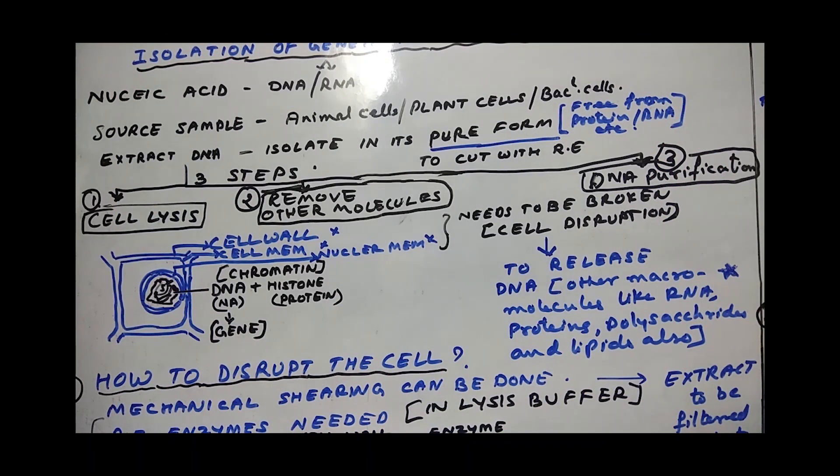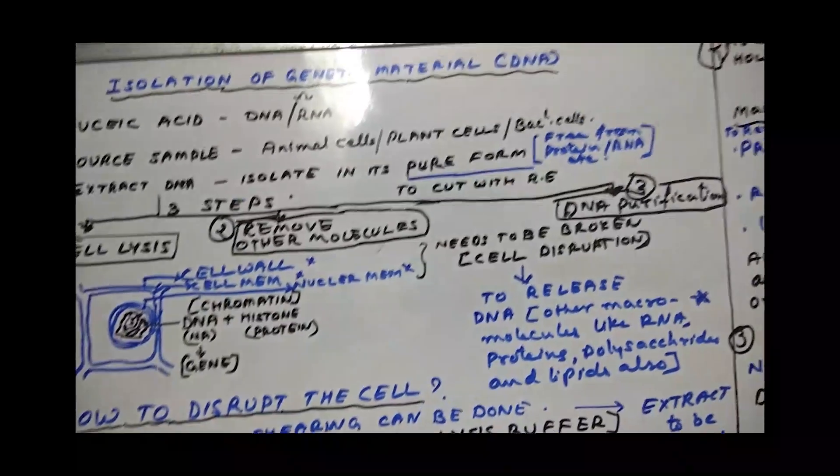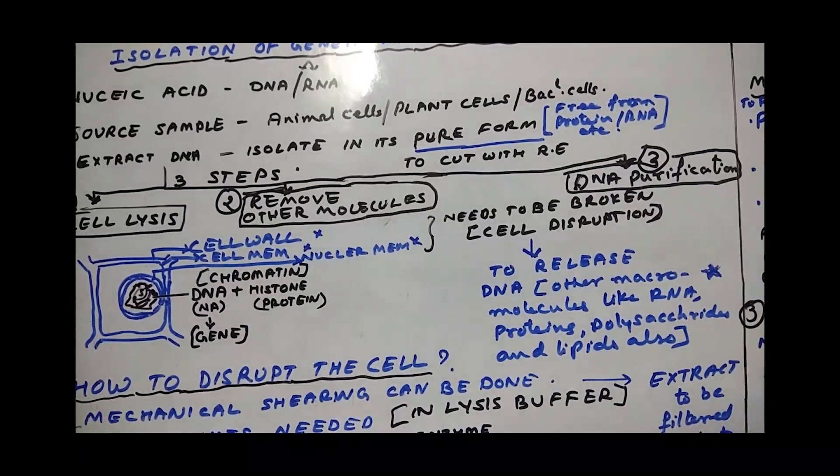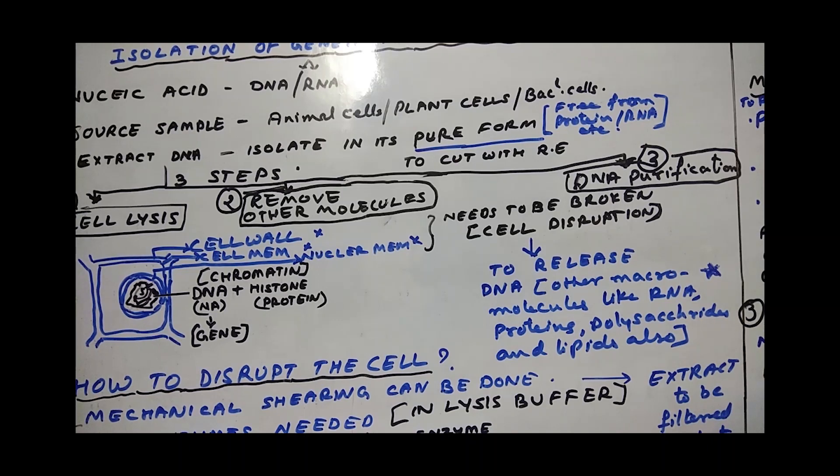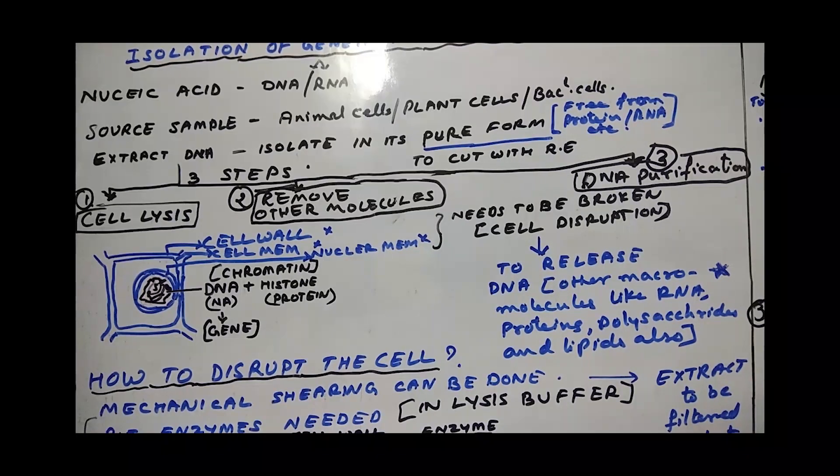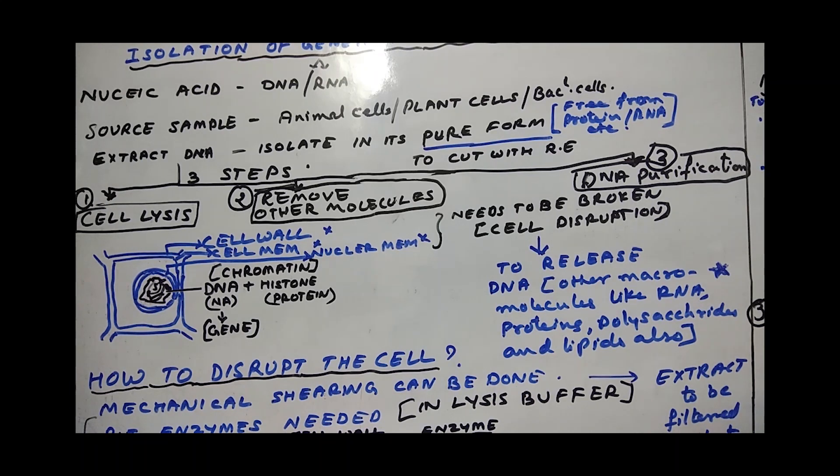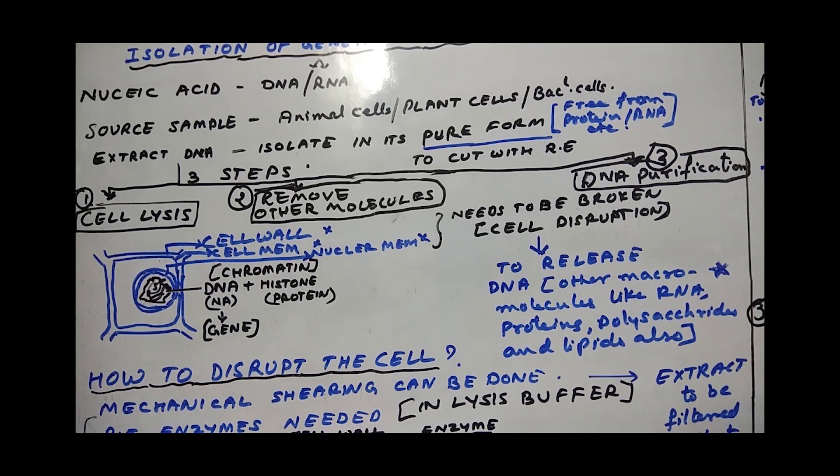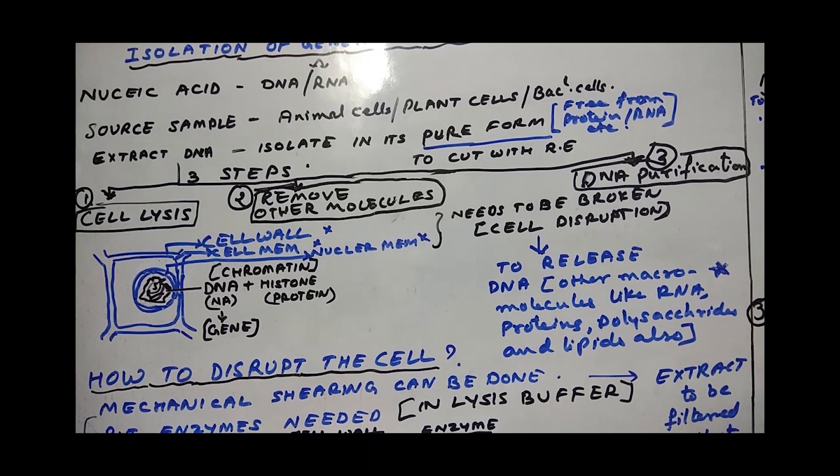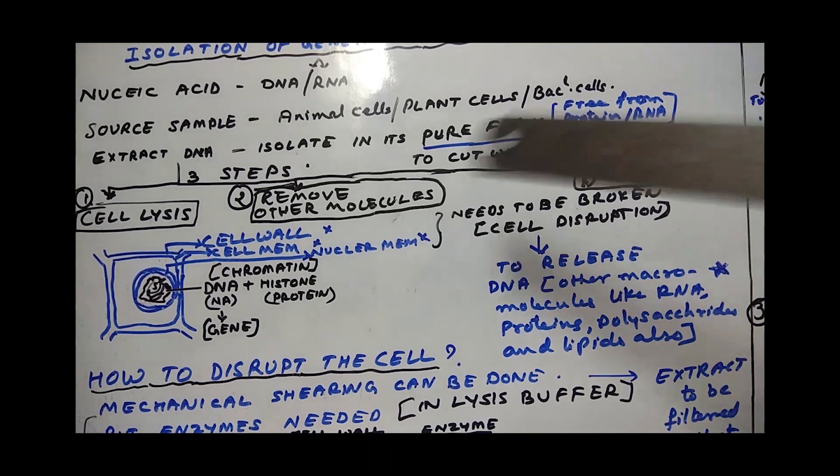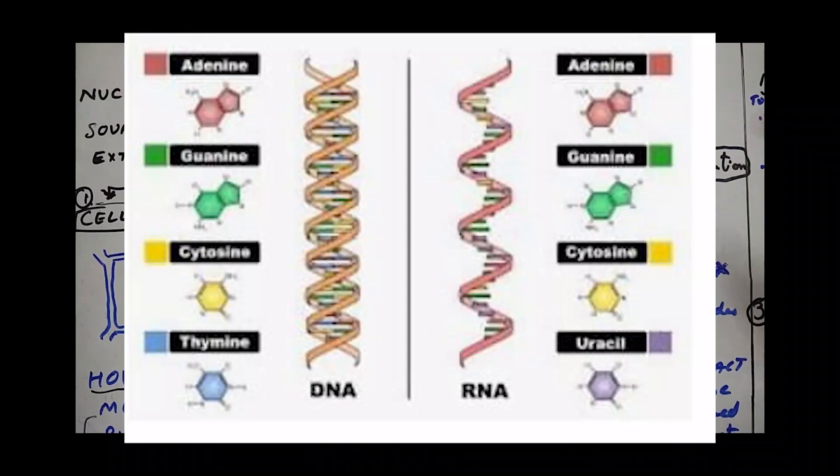Welcome back to the next topic students, isolation of genetic material DNA. So how do we isolate DNA? We are going through the steps of isolation. For recombinant DNA technology, this process I am explaining - if we need an insert or if we need a plasmid from bacteria or from plant cell genetic material, how do we go about it?